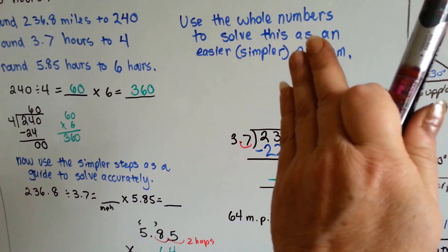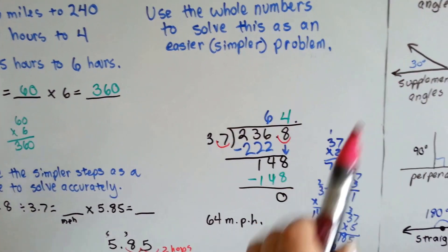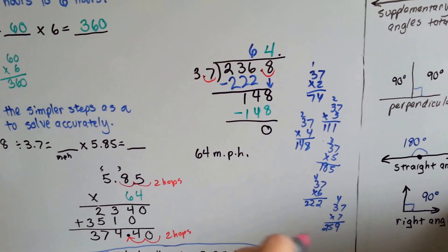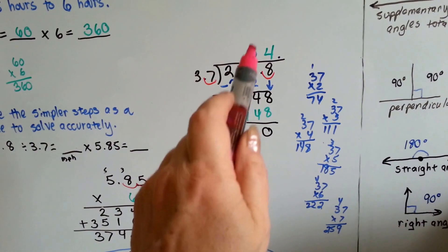37 can't fit into 2 or 23, but it can fit into 236. How many times? With our math on the side, we see that 6 is perfect at 222. We write it up there, do our subtraction and get 14.